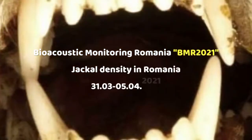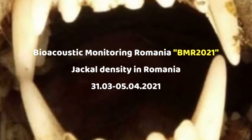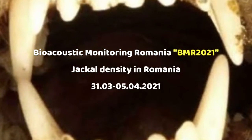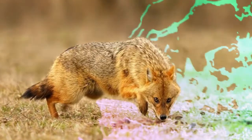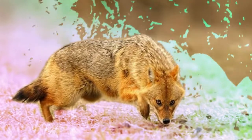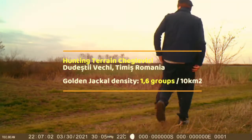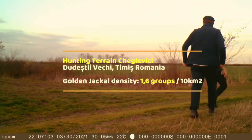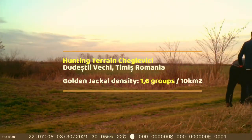Assessment of the golden jackal population size. The size of the golden jackal populations can be expressed by density or relative abundance. Population density is given by the number of individuals per unit area, for example, the number of jackal individuals per 1,000 hectares or 10 square kilometers.